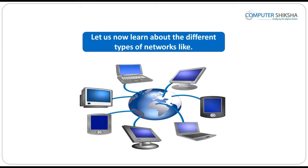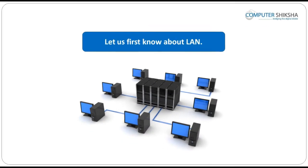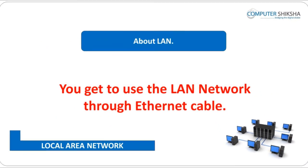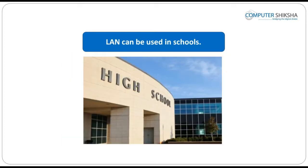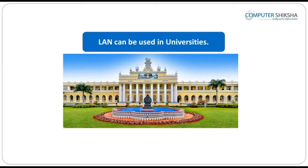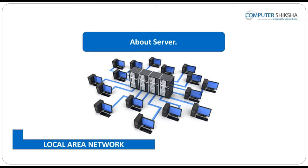Let us now learn about the different types of networks like LAN, WAN, and MAN. LAN network is used through an ethernet cable and is mostly used in offices, schools, universities and many other such places. These are local area networks in which computers are linked through servers. The server provides internet access to all the linked computers or clients through a cable. Such a connection offers speeds of 10 megabytes to 1 gigabyte.